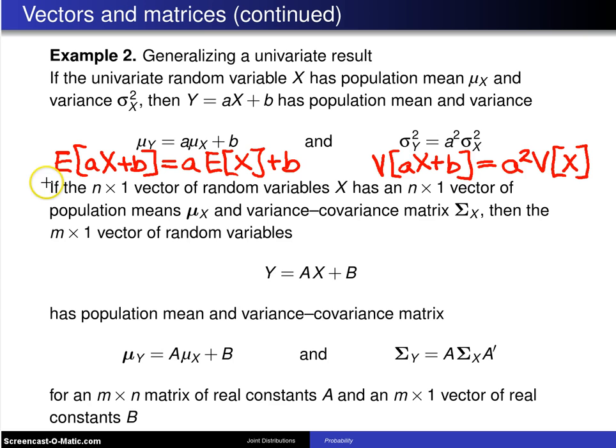This result can be generalized to n dimensions as follows. If the n×1 vector of random variables X—again, X is a column vector—and has an n×1 vector of population means μ_X and a variance-covariance matrix Σ_X,